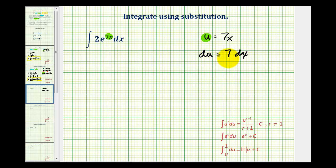But notice how there is not a 7dx in our integral. We have 2dx, so let's just focus on the dx. If we divide both sides by 7, we would have 1/7th du equals dx.